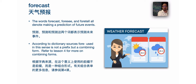The words forecast, foresee, and foretell all denote making predictions of future events or weather forecasts. According to dictionary sources, 'fore' used in this sense is not a prefix but a combining form. We see the word 'for' in 'therefore' — the conjunction. So it can be used at the beginning, as in forecast, and at the end, as in therefore. It's a combining form, not a prefix. Combining forms were discussed in Lesson 4 — refer to that lesson for more information.